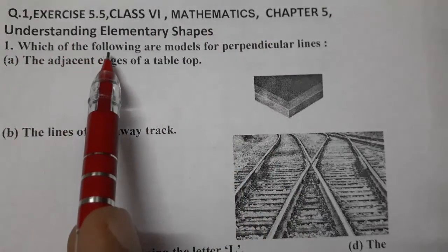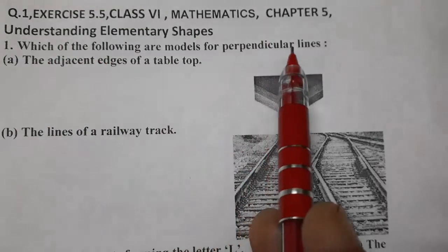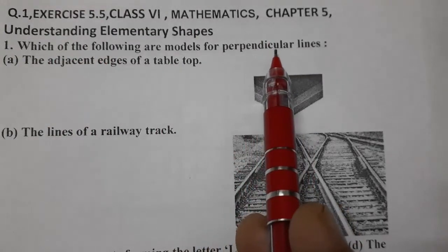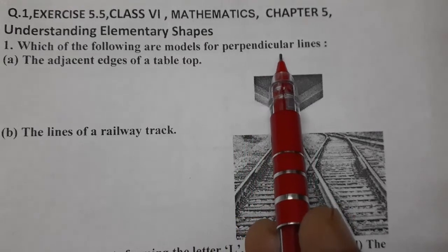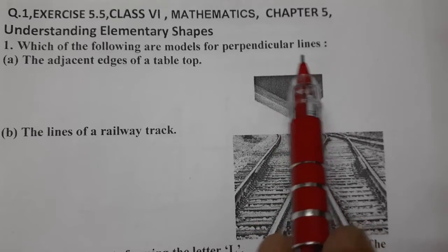Which of the following are models for perpendicular lines? So we know what are perpendicular lines. When two lines intersect each other at 90 degrees, such lines are called perpendicular lines.